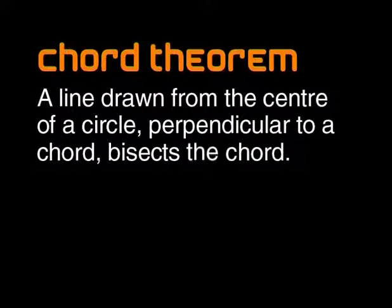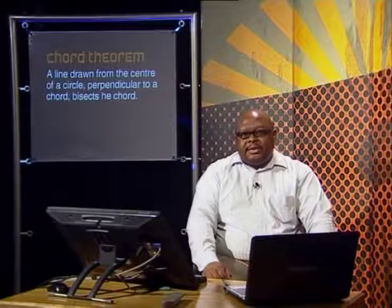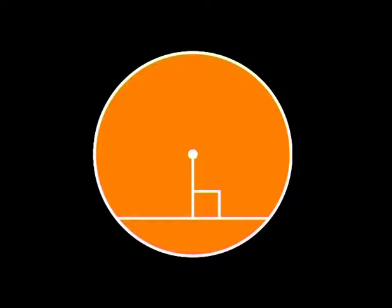Now we are ready to tackle the first circle theorem. We call it the chord theorem. This is what it states: a line drawn from the center of a circle perpendicular to a chord bisects the chord. Let's create a diagram first. Clearly we need a circle with a center, a line drawn from the center, and a chord. We must make the line perpendicular to the chord.